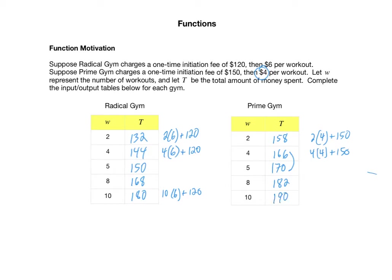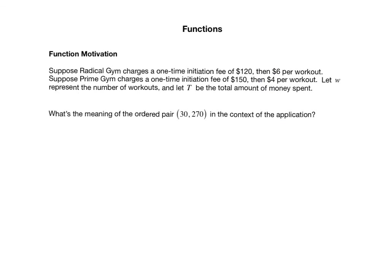So far, we've taken two input-output rules and represented them numerically as input-output tables. As usual, we want to apply the ideas. Here's a good question: what's the meaning of the ordered pair (30, 270) in context? You may ask — which gym are we talking about? Because there are two different gyms with different pay structures. So 30 workouts for $270 could apply to Radical Gym or Prime Gym. There's a weakness to this notation — we don't know exactly which gym it applies to.